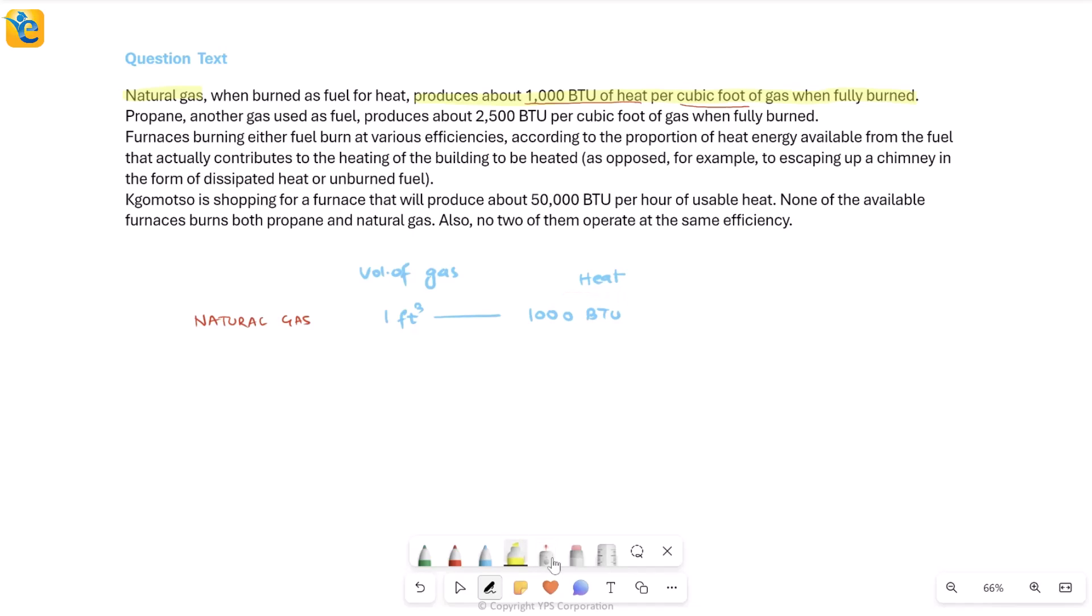Now let's read further. Then it talks about another gas, propane. This is another gas which is used as fuel, and this produces about 2500 BTU per cubic foot of gas when fully burned. Let me write down fully burned here because this is valid for both of them. Now the values have changed. It is still that I am burning one cubic foot of propane gas, but as a result, I am generating more heat. It's now 2500 BTU.